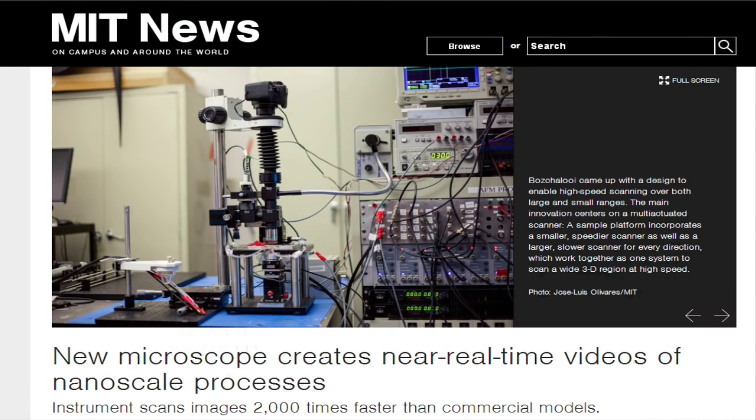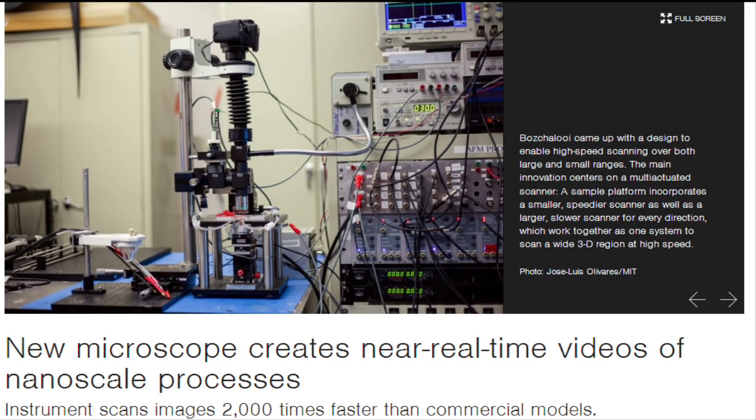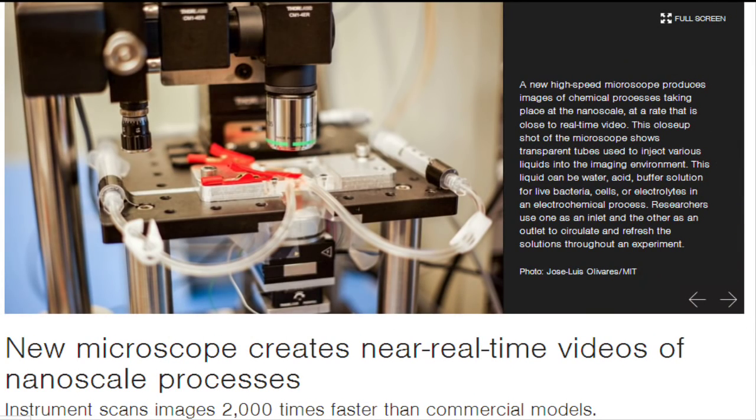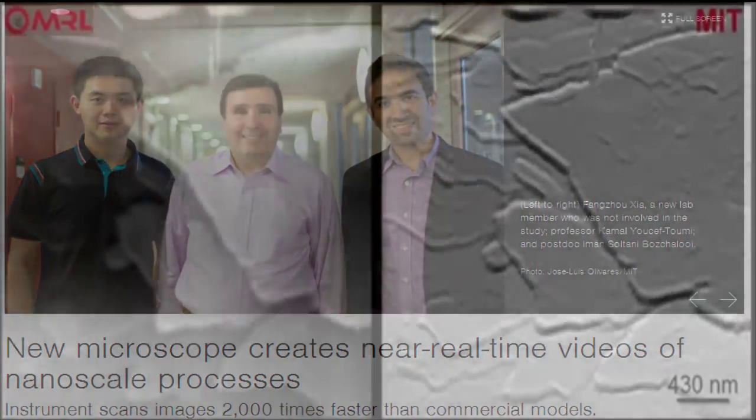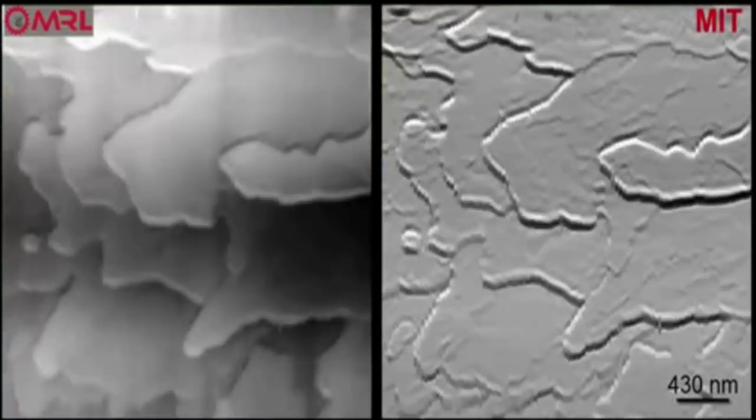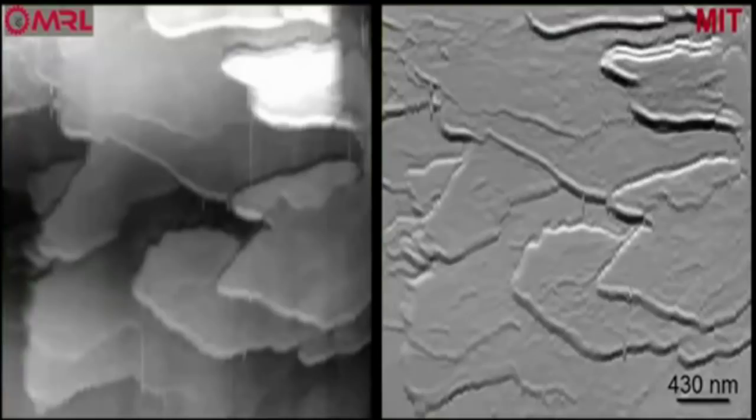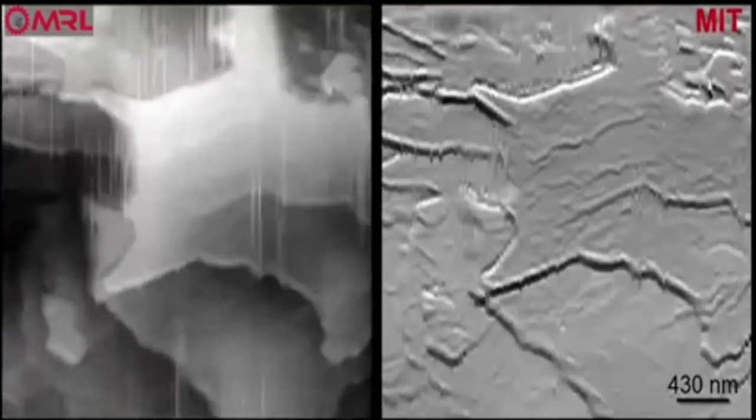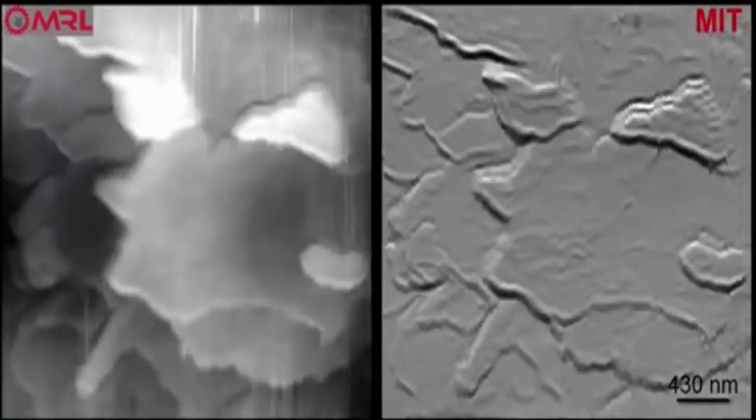engineers at MIT have designed an atomic force microscope that scans images 2,000 times faster than existing commercial models. With this new high-speed instrument, the team produced images of chemical processes taking place at the nanoscale at a rate that is close to real-time video.